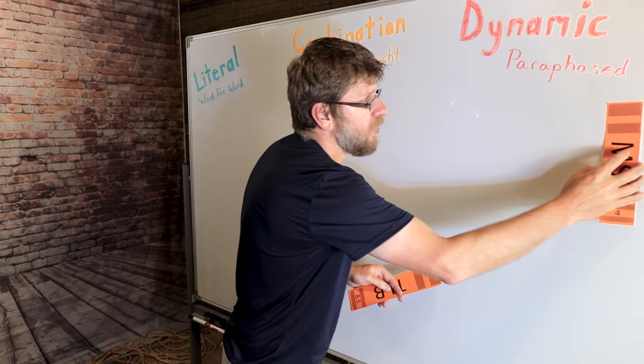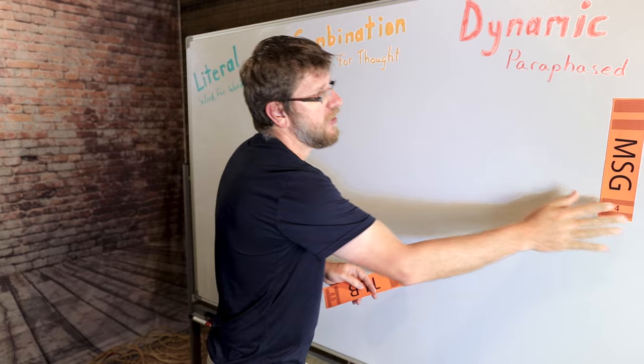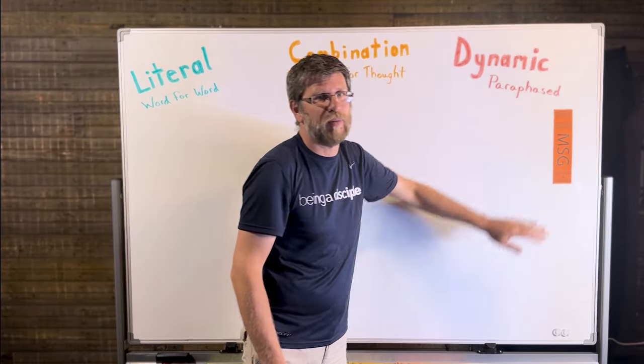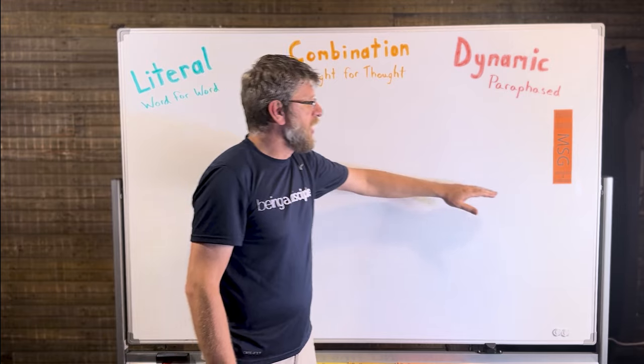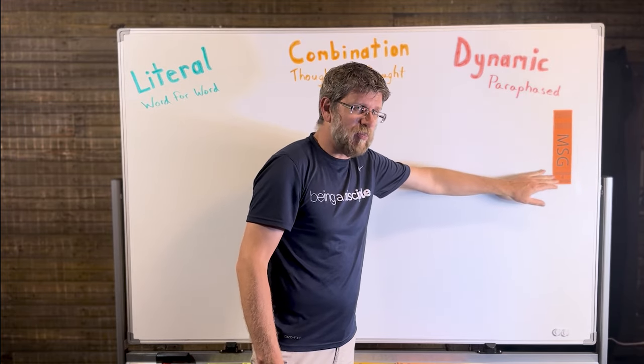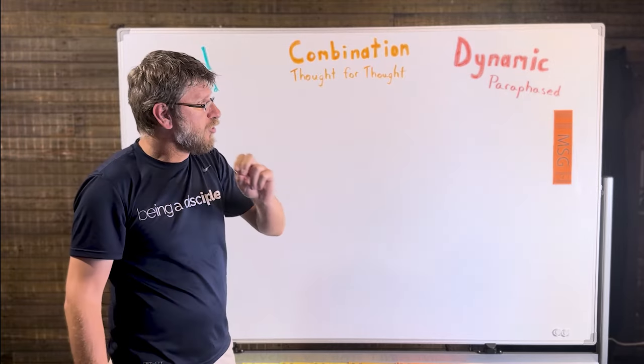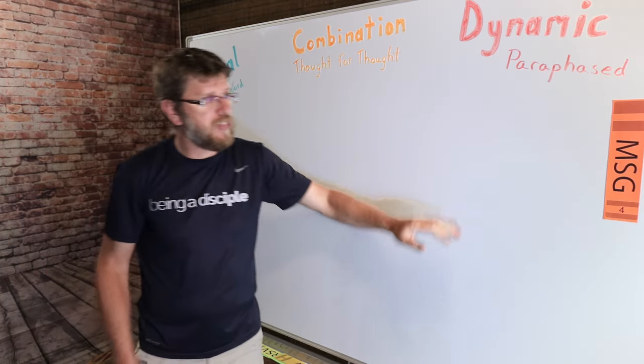Because he was a well-published author, his translation was well-sold and became a pretty famously sold Bible and is still accessible today. On the bottom of each of these cards or these book backs, you will see a number, and that number is the reading grade level of each of these translations.